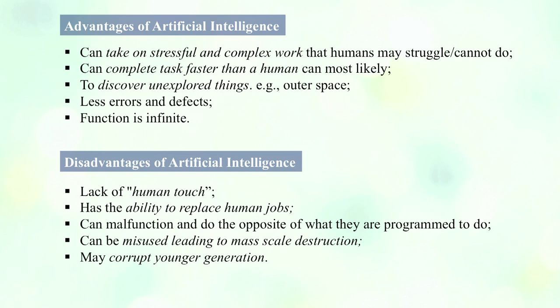Advantages of artificial intelligence: AI can take on stressful and complex work that humans may struggle to do; it can complete tasks faster than a human; it is more likely to discover unexplored things like outer space; it produces fewer errors and defects; and its functions are indefinite.